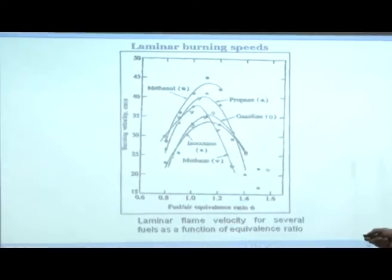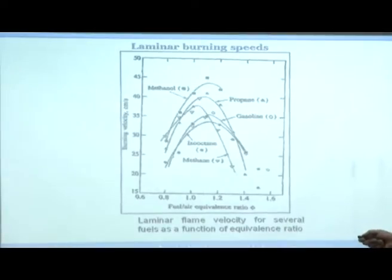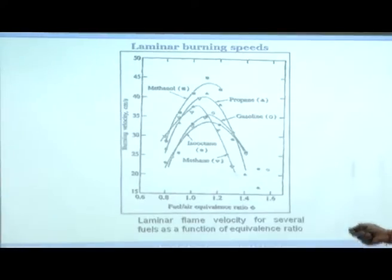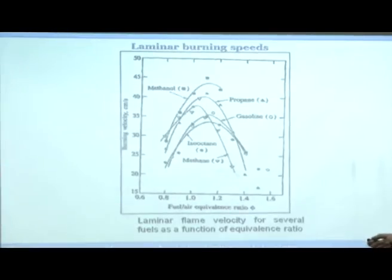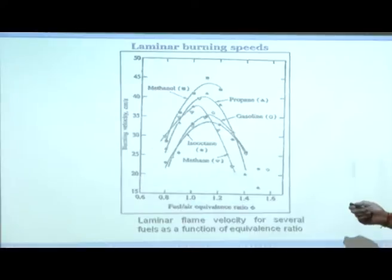The burning velocity is plotted versus equivalence ratio, with richer on one side and leaner on the other. For methanol, you can burn up to an equivalence ratio of 1.2 on the rich side — beyond 1.2 it is not possible to ignite. Propane went up to 1.4. Gasoline flame speed is generally lower than propane and lower than methanol. Methanol flame speeds are the fastest among these three fuels, and iso-octane is slightly lower than gasoline.